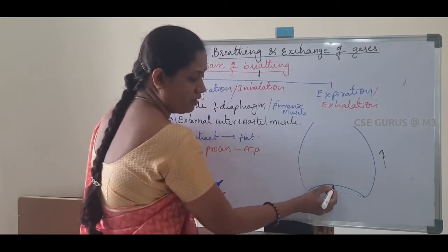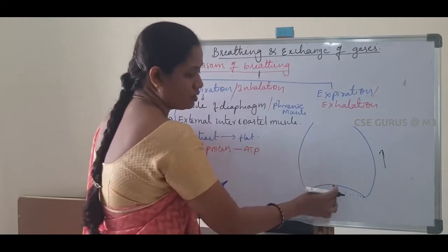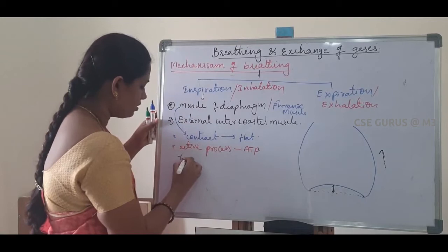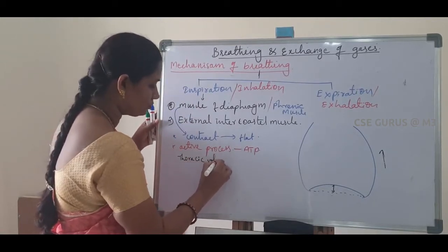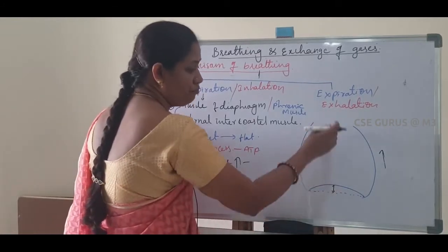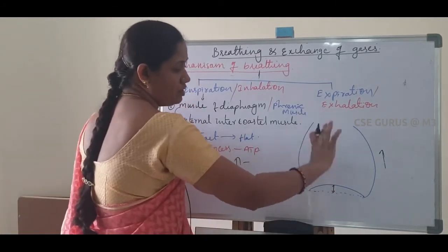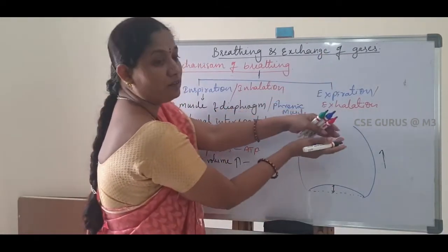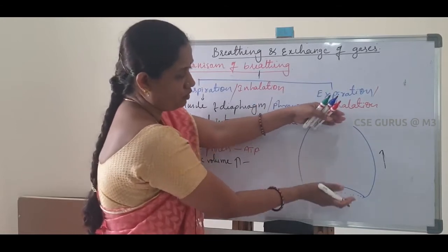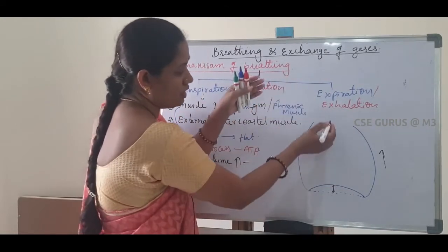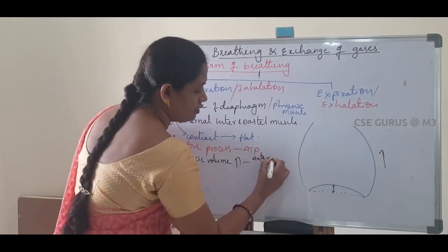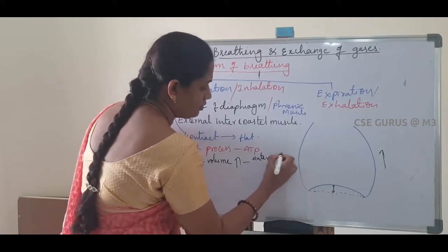When the diaphragm becomes flat, the space in the thoracic chamber is increased. This thoracic volume increases along the anterior to posterior axis.